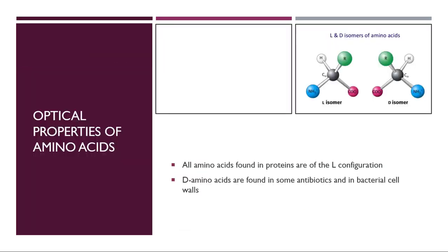So the optical properties of amino acids — you can see in the picture — this is the L isomer and this is the D isomer of the amino acid. Amino acids are chiral compounds and they can make mirror images. All the amino acids found in proteins have the L configuration, and D amino acids are found in some antibiotics and in bacterial cell walls.